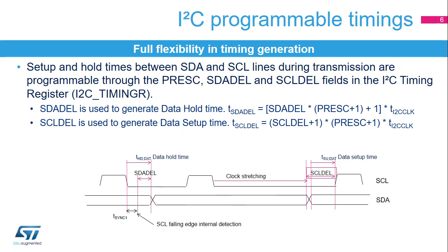The I2C peripheral waits for the programmed data hold time after detecting a falling edge on the clock line before sending the data. After the data is sent, the clock line is stretched low during the programmed data setup time. The total data hold time is greater than the programmed SDA-DEL counter, because the SDA-DEL delay is only added once the SCL falling edge is internally detected. The time TSYNC-1 needed for this internal detection depends on the SCL falling edge, the input delay due to the filters, and the delay due to the internal SCL synchronization with the I2C clock. However, the setup time is not impacted by these internal delays.